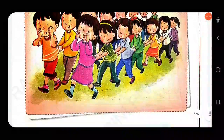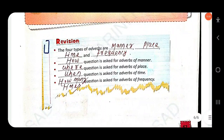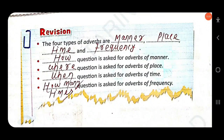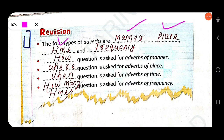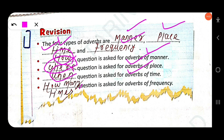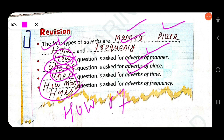Revision: the four types of adverbs are — adverb of manner (question: how?), adverb of place (question: where?), adverb of time (question: when?), and adverb of frequency (question: how many times? or how often?).